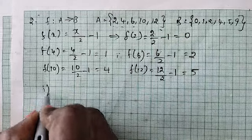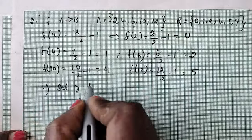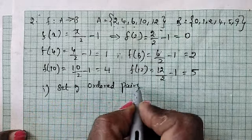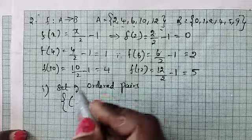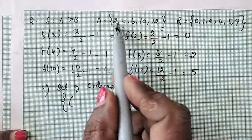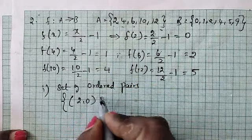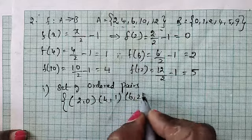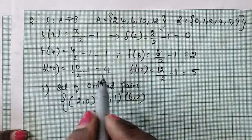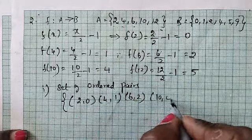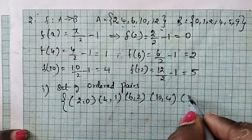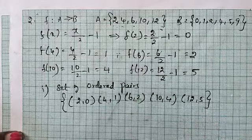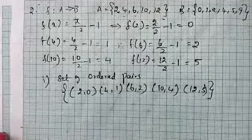First one set of ordered pairs. Set bracket: 2 comma 0, 4 comma 1, 6 comma 2, 10 comma 4, and then 12 comma 5. Close bracket.